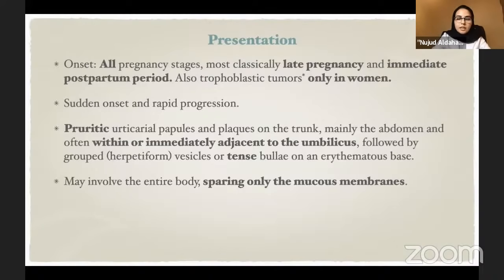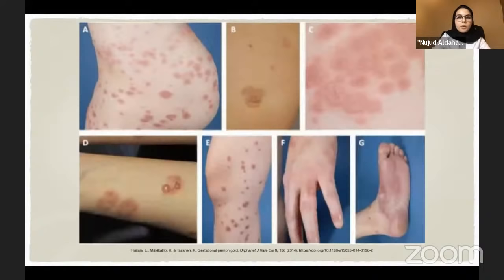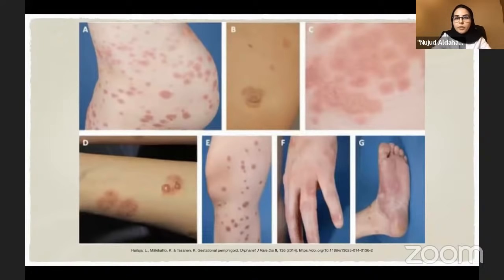Pemphigoid gestationis is characterized by sudden onset and rapid progression. In addition to pruritus, patients develop urticarial papules or plaques, typically initially on the trunk and abdomen with predilection for the umbilicus, which then evolve into grouped or herpetiform vesicles on an erythematous base. It can involve any part of the body and only spares the mucous membranes. The pictures show different stages: urticarial papules and plaques with periumbilical predilection, then vesicles and tense bullae, and involvement of palms and soles.